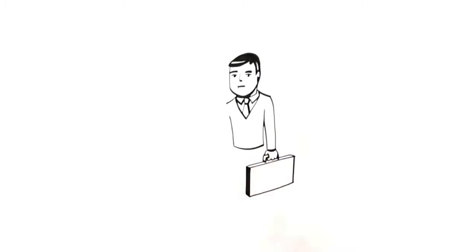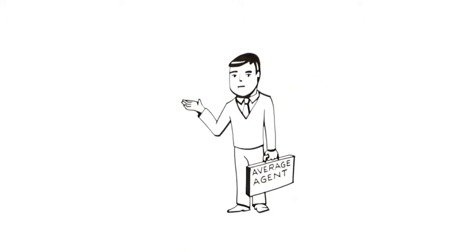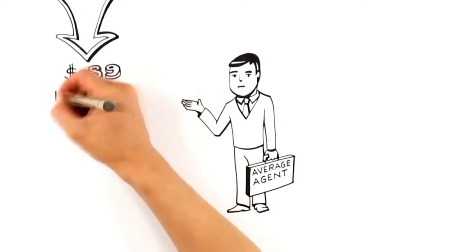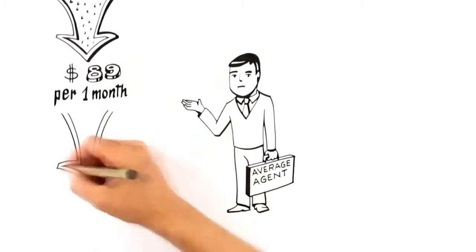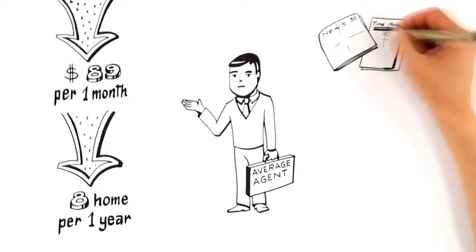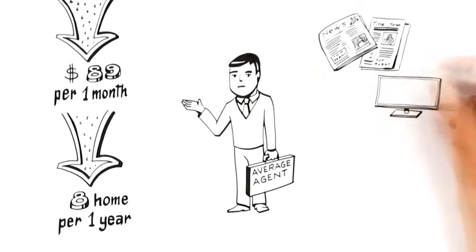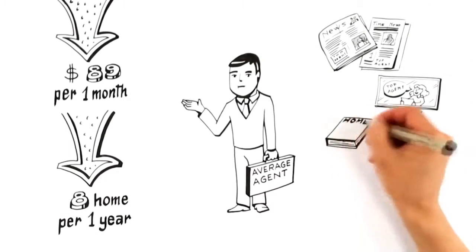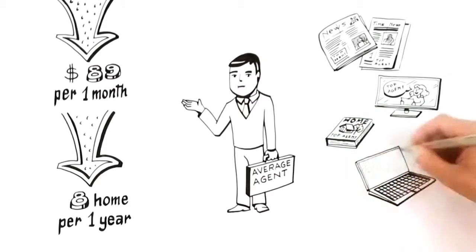Exposing your home to the market requires marketing. Research shows that the average agent only spends $89 a month on marketing and only sells an average of eight homes per year. On the other side, top agents will tout their large budgets for newspaper, TV, home magazines, and a list of hundreds of websites where they advertise.